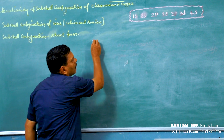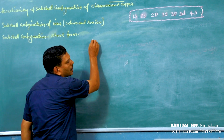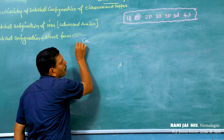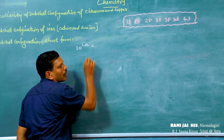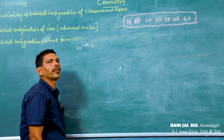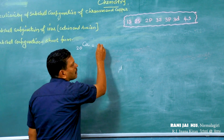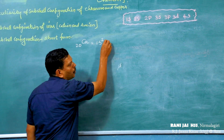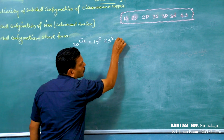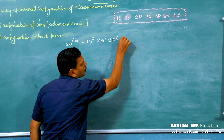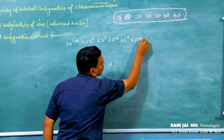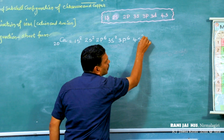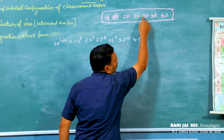Now we can write the electronic configuration of calcium, atomic number 20. Write it order-wise: 1s2, 2s2, 2p6, 3s2, 3p6, and 4s2. That accounts for all 20 electrons.